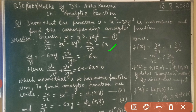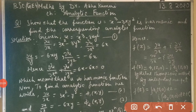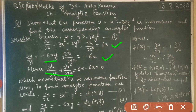Next, we find the partial derivative with respect to y. Differentiating equation (1) with respect to y gives ∂u/∂y = -6xy, and differentiating again gives ∂²u/∂y² = -6x. Adding the two second-order derivatives: ∂²u/∂x² + ∂²u/∂y² = 6x + (-6x) = 0. Since this equals zero, u is a harmonic function.